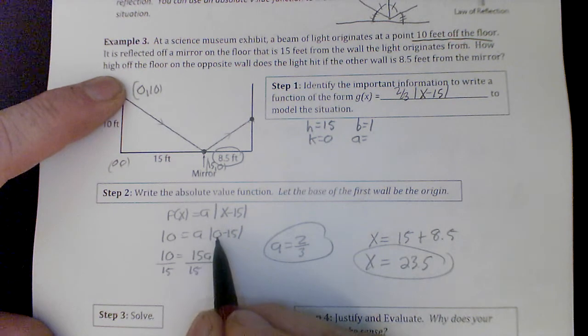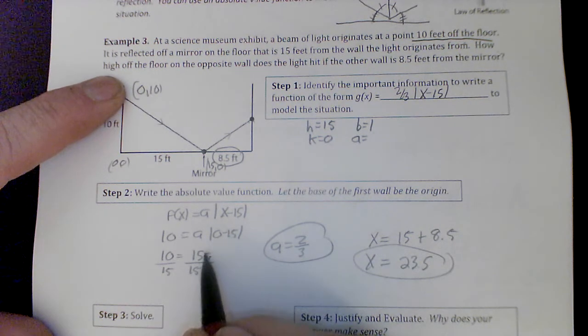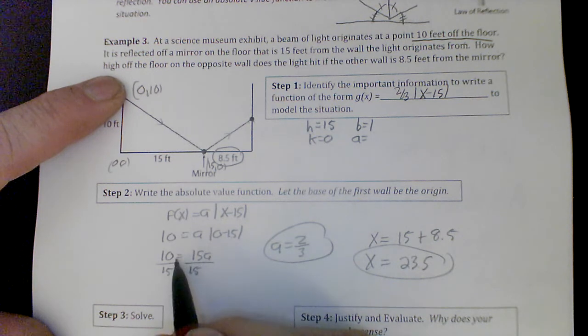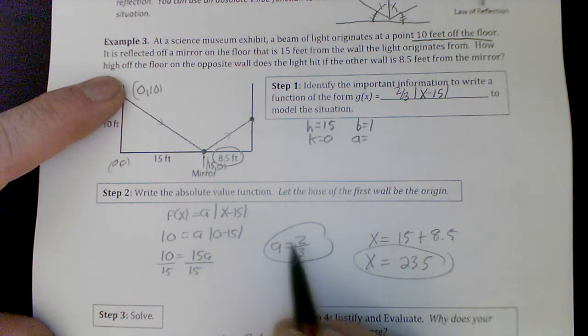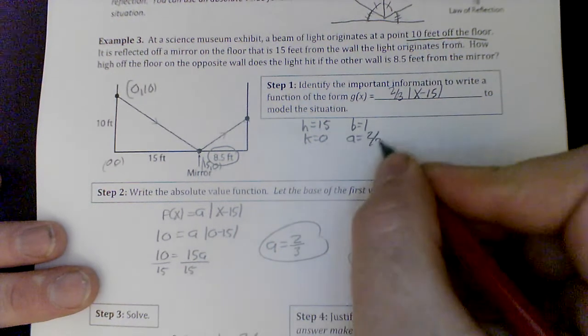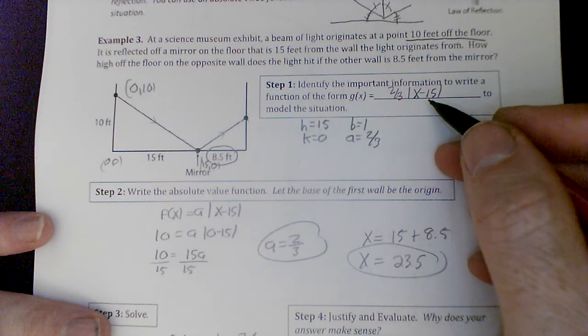I have a times the absolute value of 0 minus 15. Absolute value is going to make that negative 15 into a positive 15. Once I divide, 10 divided by 15 gives me an a of 2/3. Kind of nice. So I know my a value is 2/3, which allows me to write this equation, a very simple equation.